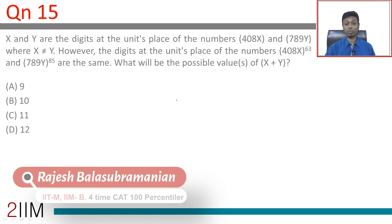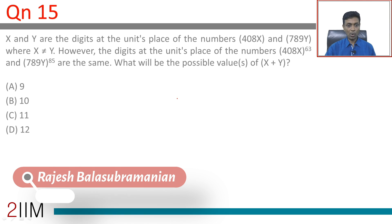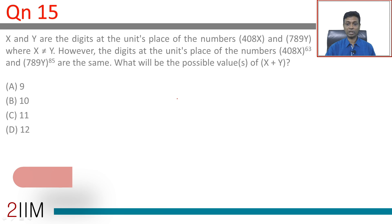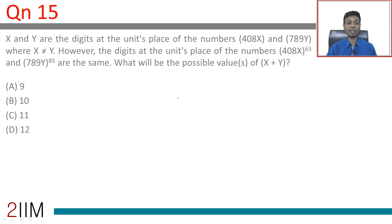x and y are the digits of the units place of the numbers 408x and 789y, and x is not equal to y. However, the digits at the units place of 408x to the power 63 and 789y to the power 85 are the same. What will be the possible value or values of x plus y?